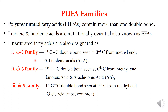Now this classification is based on the presence of the first double bond. Omega-3 means that the first double bond is at the third carbon from the methyl end. Example is alpha-linolenic acid. In the omega-6 family, the first carbon-to-carbon double bond is seen at the sixth carbon from the methyl end.